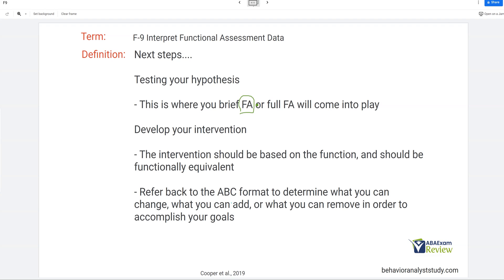The intervention revolves around the function. It's why we preach to technicians, to paraprofessionals, the importance of function. Everything we do revolves around that function. The intervention has to be based on the function and should be functionally equivalent. If you're teaching replacement behaviors, those replacement behaviors need to serve that same purpose. They have to meet that same function. And so what you can do is you can refer back to your ABC format to see what can I change? What can I add? What can I remove in order to accomplish our goals?